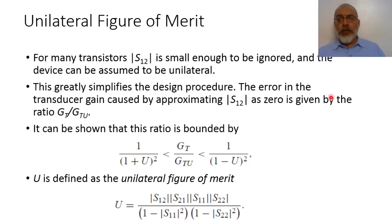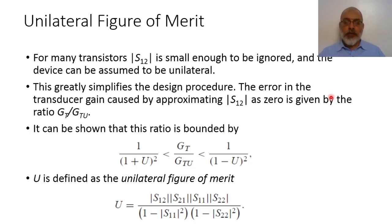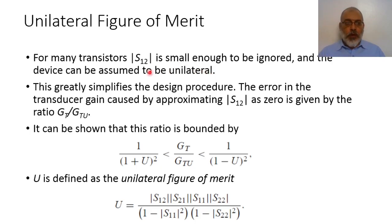Before going on to design such a constant gain amplifier, the design will be simplified by using a unilateral transistor assumption. At the beginning, we are going to discuss the effect of assuming that the transistor is unilateral. For many transistors, the value of S12 is usually small enough to be ignored, and in this case the device can be assumed to be unilateral.